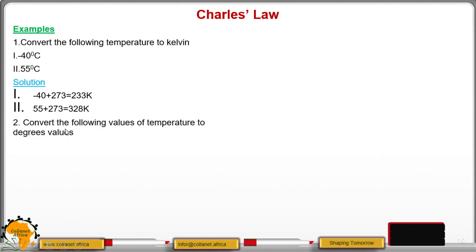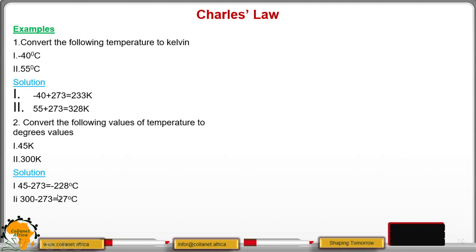Now convert the following values of temperature to degrees Celsius: 45 Kelvin minus 273 gives negative 228 degrees Celsius; and 300 Kelvin minus 273 gives 27 degrees Celsius.